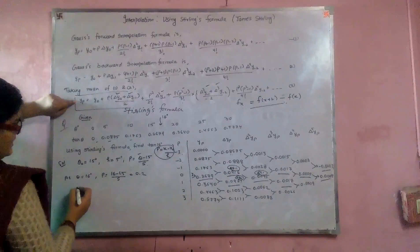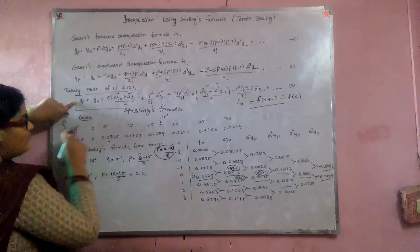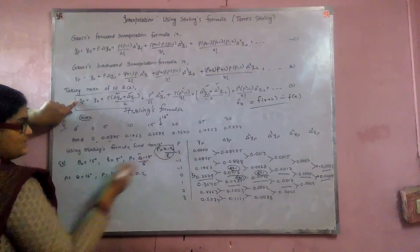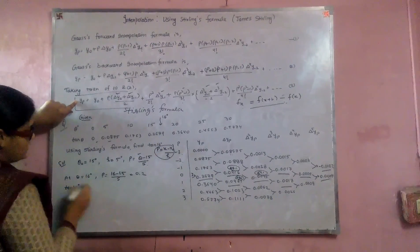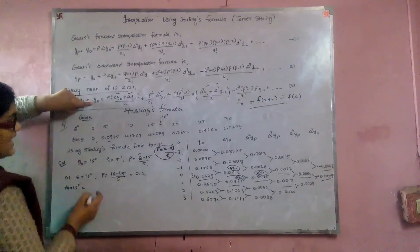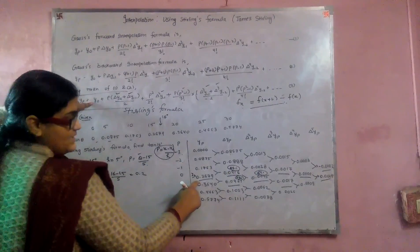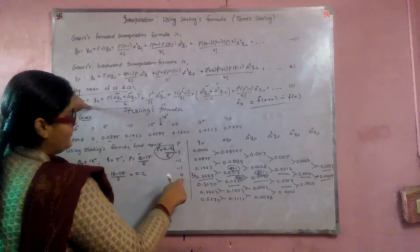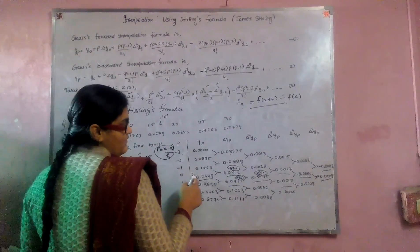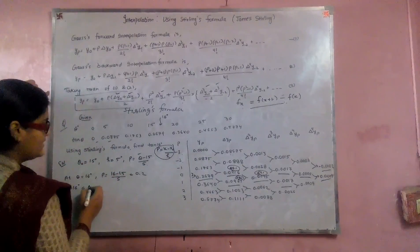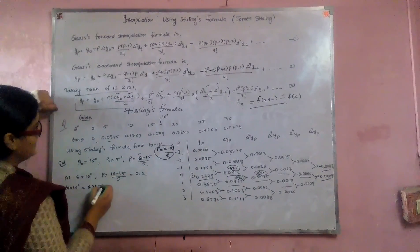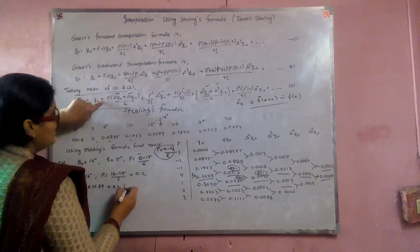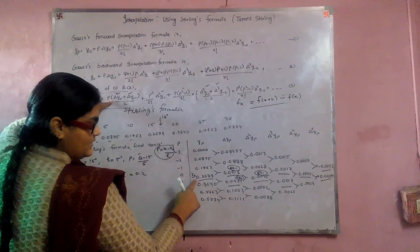Now we apply the formula. Here yp means tan(θ), and we need tan(16°). So yp is our required value. y₀ is the value at argument 0, which gives 0.2679. Plus p — which is 0.2 — times (Δy₀ + Δy₋₁)/2. The value of Δy₀ is read from the table.